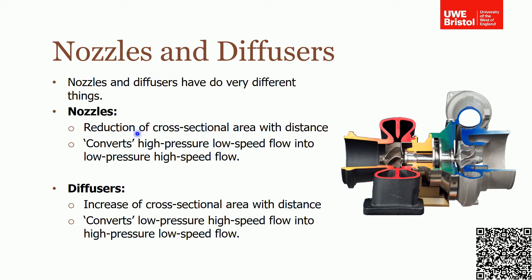Diffusers do the opposite: instead of reducing cross-sectional area, diffusers increase in cross-sectional area with distance. This converts low-pressure, high-speed flow into high-pressure, low-speed flow — the exact opposite of a nozzle. On the compressor side of the turbocharger, air is accelerated by the compressor blades and exits into a region where the cross-sectional area increases, so velocity reduces and pressure goes up.